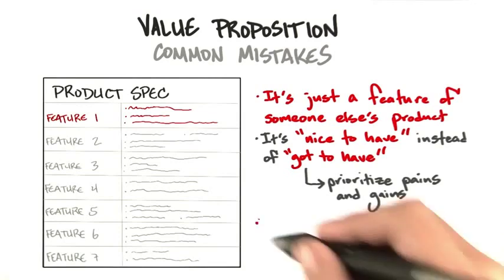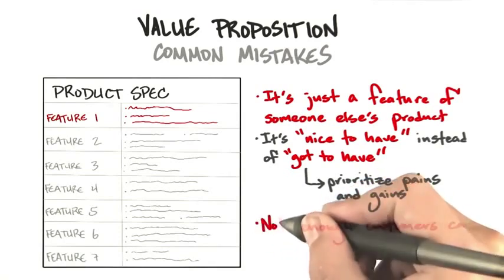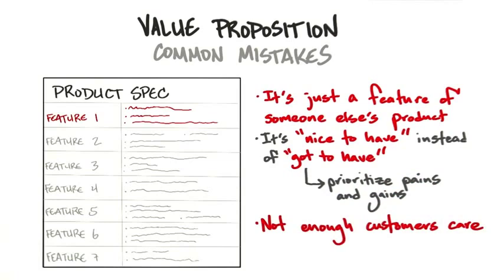It has to be something that people demand and there have to be enough of them. You might find five people in the entire world that love the product, but that might not be a large enough market.